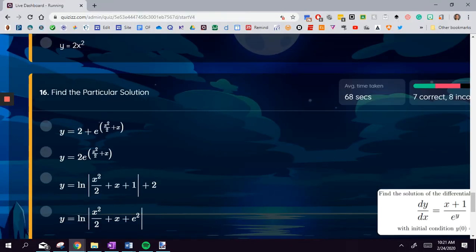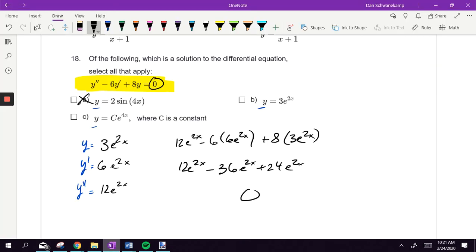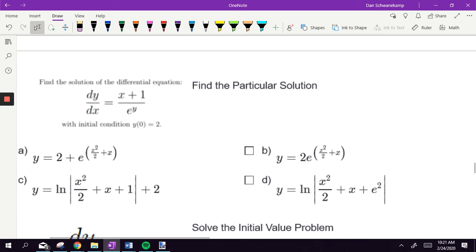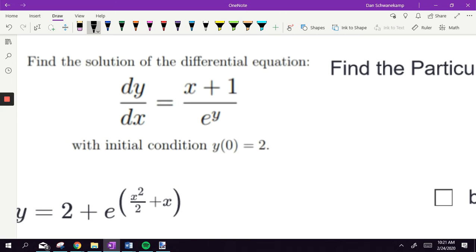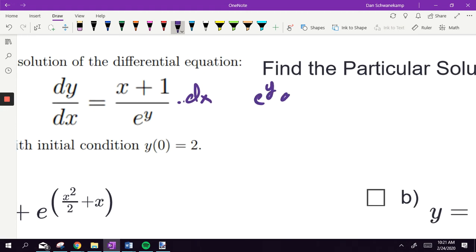Let's see what other ones we struggled with. Now we're getting all the ones right. Find the particular solution, number 16. Find the particular solution with the initial condition zero two. So first thing I'm going to do here is separate it. If I wanted to separate here, Megan, what would I need to do to get the y's on the same side? Yep, multiply by dx. Yep, good, and so she's got e to the y dy is equal to x plus 1 dx.